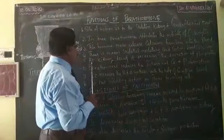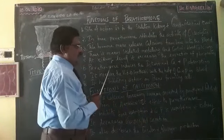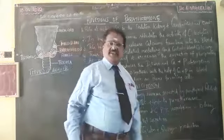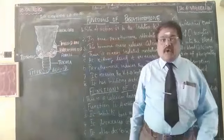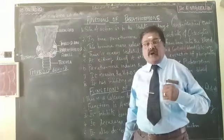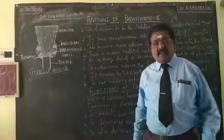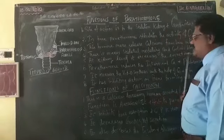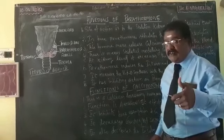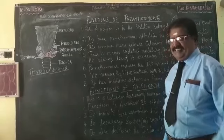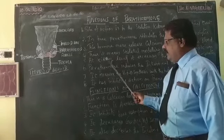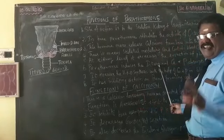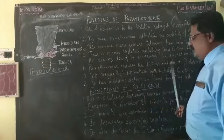At the kidney level, parathormone increases the excretion of phosphates, because phosphates should not accumulate in the body at excess levels. It continuously controls the excretion of any excess phosphates in the blood at the kidney level.